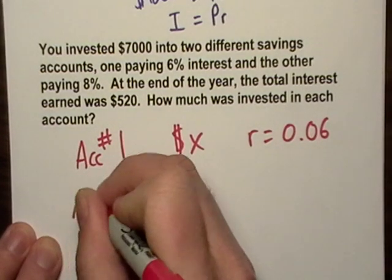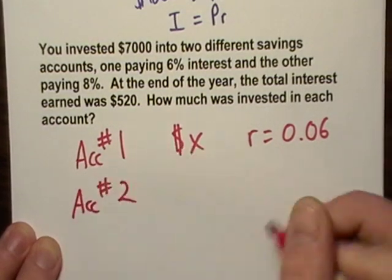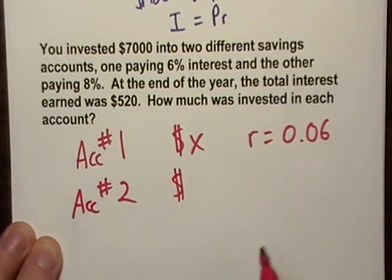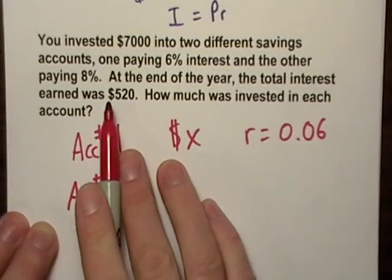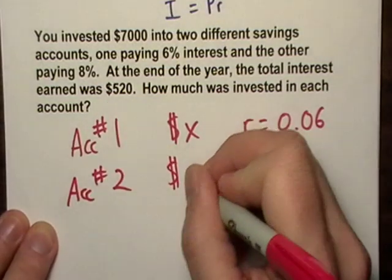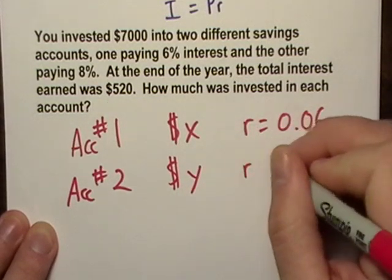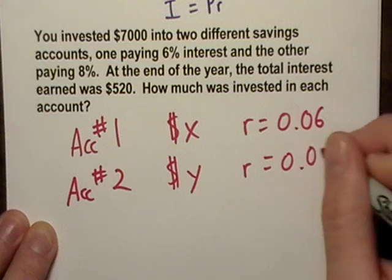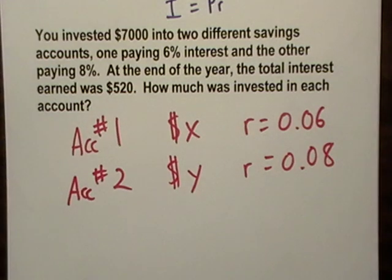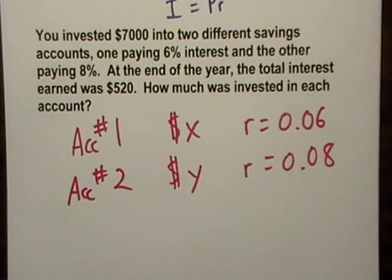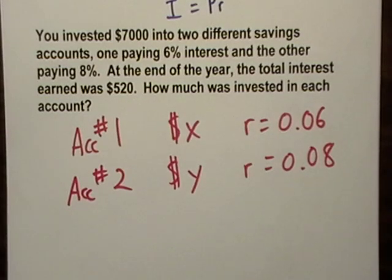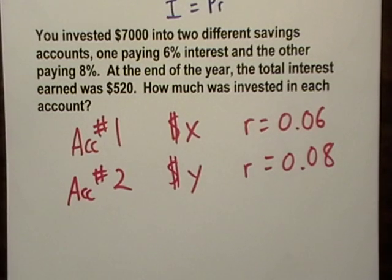And account number two, I don't know how much I put in again. I put Y dollars in, and that rate was 8%. So basically we have all we have here is really just a big addition problem. That's all this is because we're going to add these two accounts together.